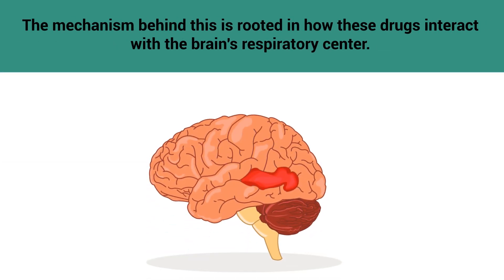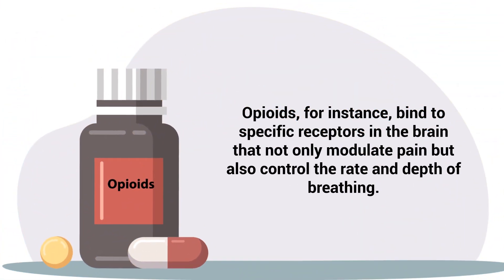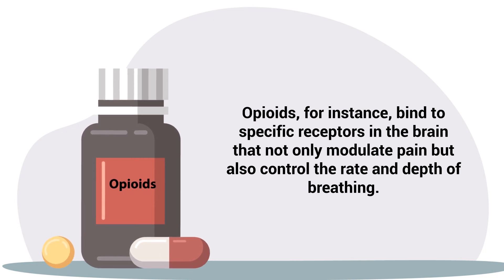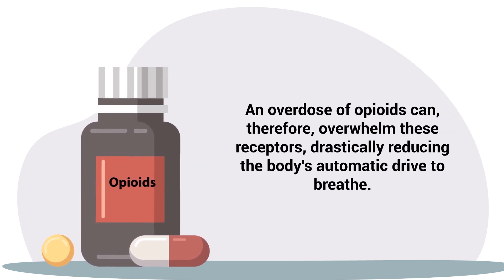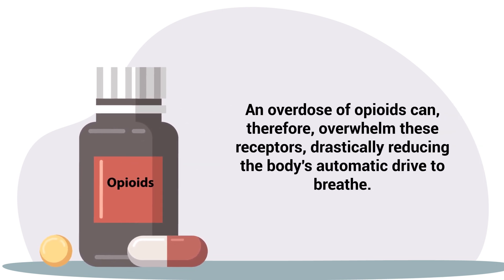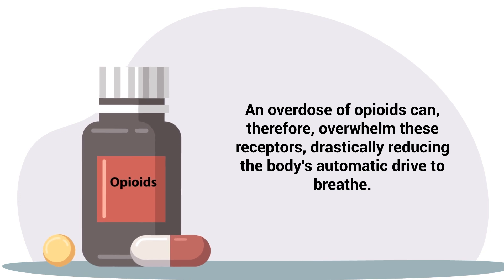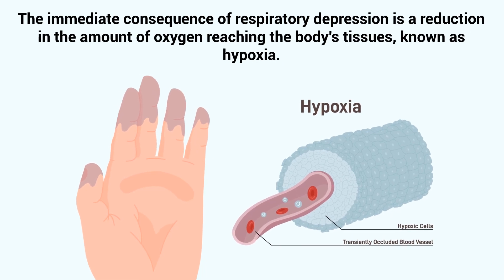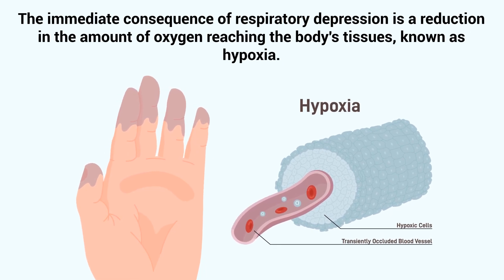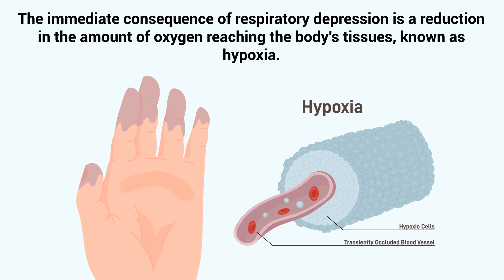The mechanism behind this is rooted in how these drugs interact with the brain's respiratory center. Opioids, for instance, bind to specific receptors in the brain that not only modulate pain but also control the rate and depth of breathing. An overdose of opioids can, therefore, overwhelm these receptors, drastically reducing the body's automatic drive to breathe. The immediate consequence of respiratory depression is a reduction in the amount of oxygen reaching the body's tissues, known as hypoxia.